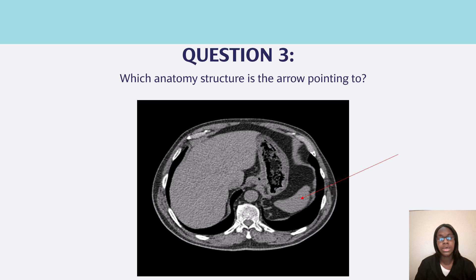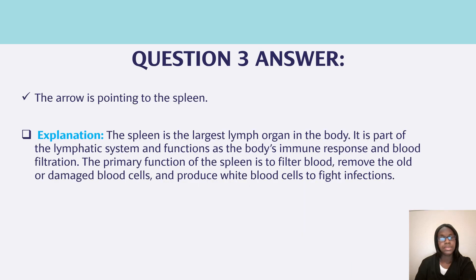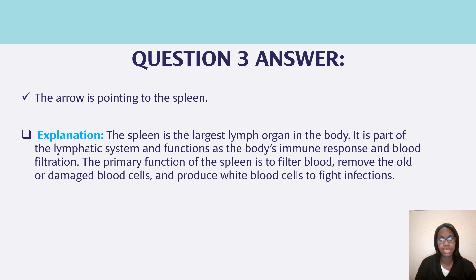Question three, which anatomy structure is the arrow pointing to? The arrow is pointing to the spleen. The spleen is the largest left organ in the body. It is part of the lymphatic system and functions as the body's immune response and blood filtration. The primary function of the spleen is to filter blood, remove old or damaged blood cells, and produce white blood cells to fight infections.